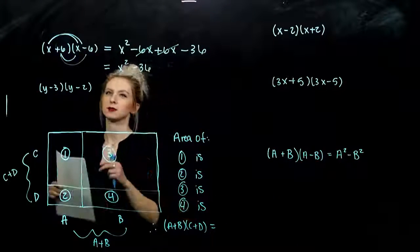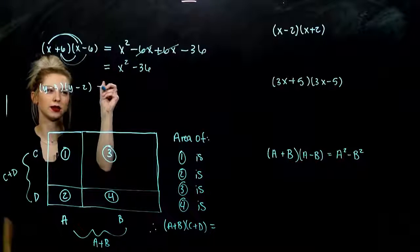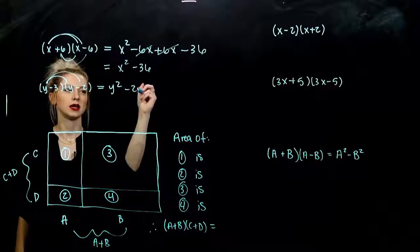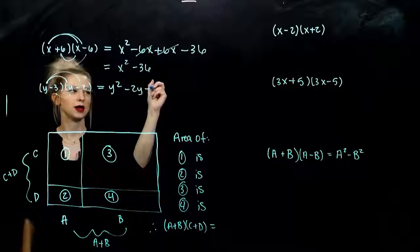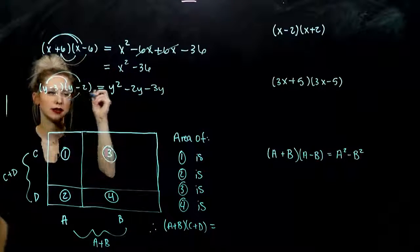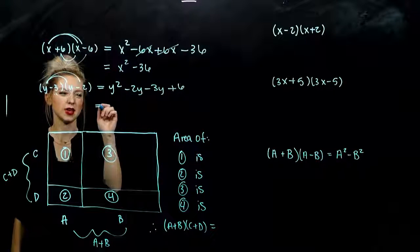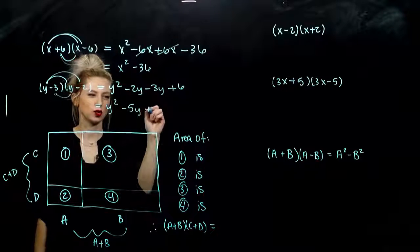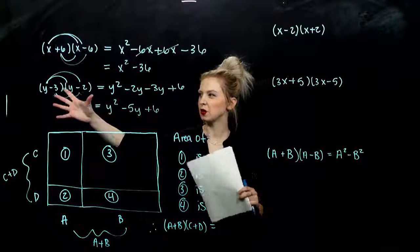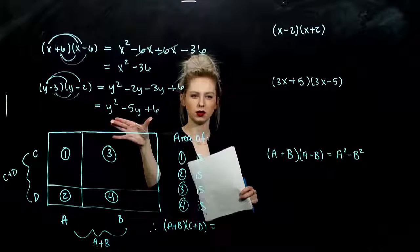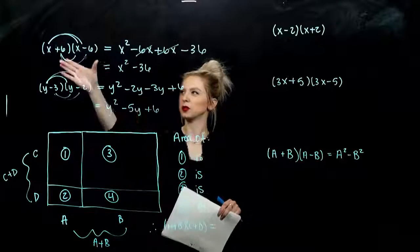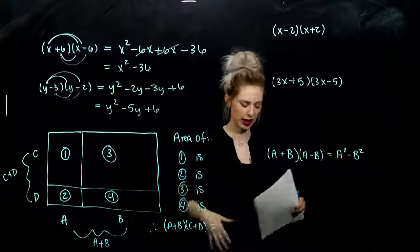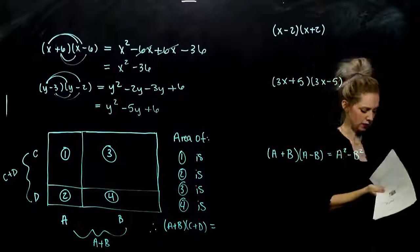But what happened in this case? How many terms in the end were left here? First, y squared. Outer, minus 2y. Inner, minus 3y. And last, plus 6. So in the end, when we combine our like terms here, we have a trinomial. So when I multiply ones that look like this, I got three terms. But when I multiplied ones that look like this, I got two terms. So we're going to start to notice those patterns as we go along in this section.